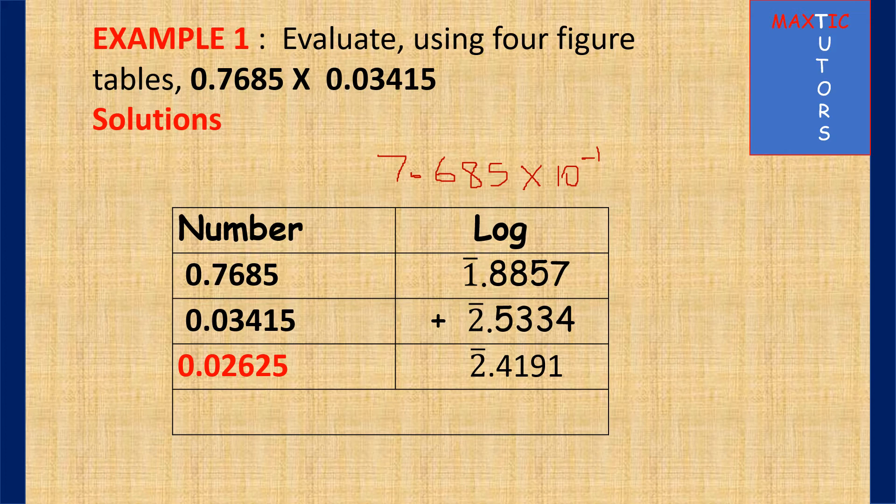For the second number, if you write it in standard form, you have 3.415 times 10 raised to power minus 2, and the minus 2 is the characteristic here. Then 34 under 1 difference 5 will give you 2.5334. By the time you add up everything together, it becomes 7 plus 4, that is 11. You carry 1 here, 1 plus 5 is 6, plus 3 is 9.